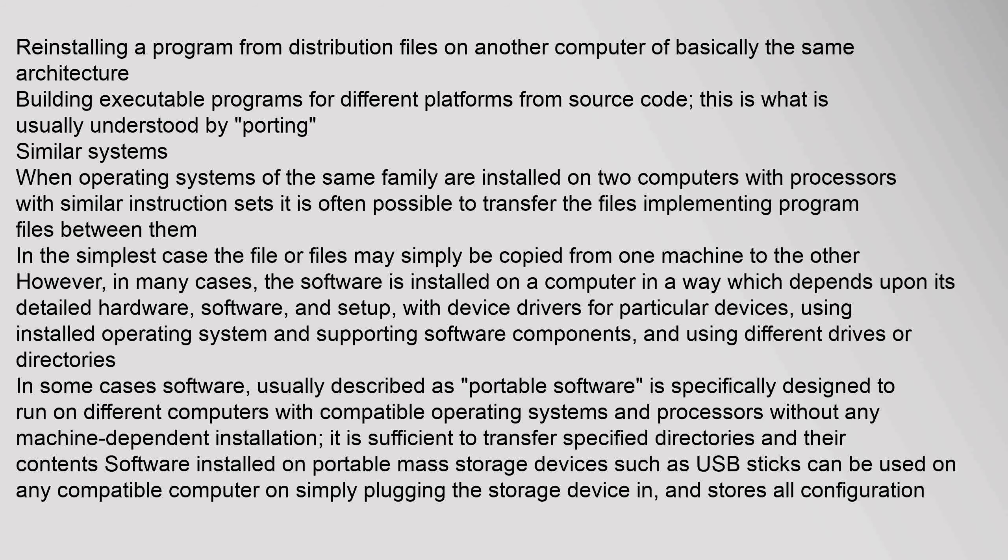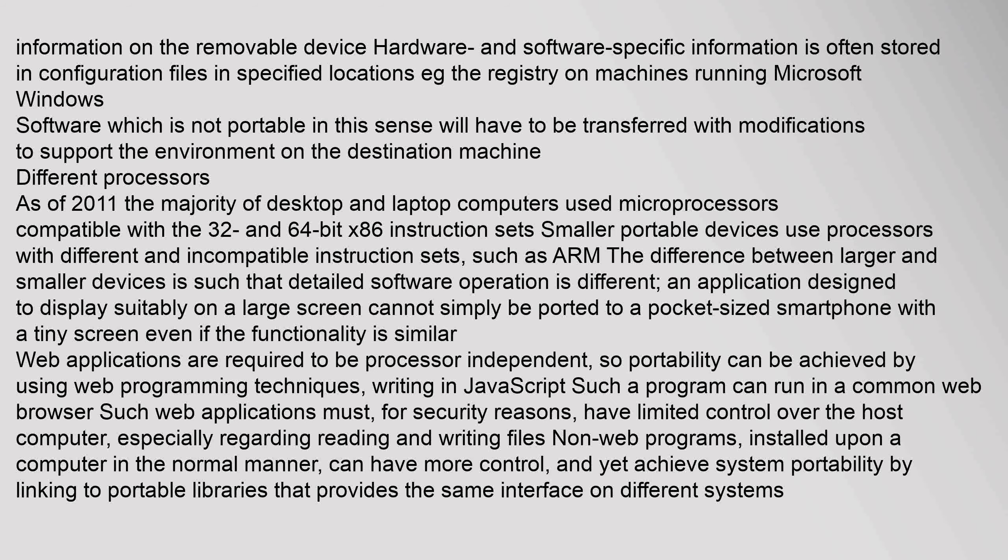Installation may depend on device drivers for particular devices, the installed operating system and supporting software components, and different drives or directories. In some cases, software usually described as portable software is specifically designed to run on different computers with compatible operating systems and processors without any machine-dependent installation. It is sufficient to transfer specified directories and their contents. Software on portable mass storage devices such as USB sticks can be used on any compatible computer simply by plugging the storage device in.